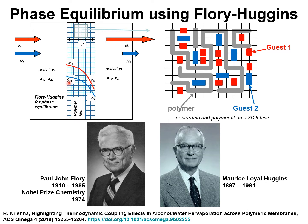The symbol phi denotes the volume fractions of components one and two in the polymer phase. The description of thermodynamic equilibrium between the bulk fluid mixture and the polymer film is described using the Flory-Huggins equation.